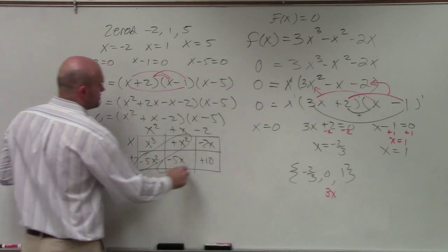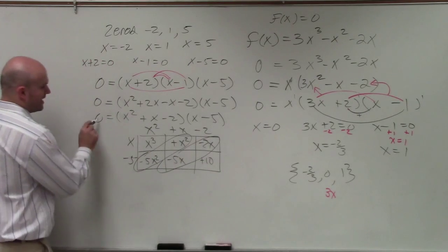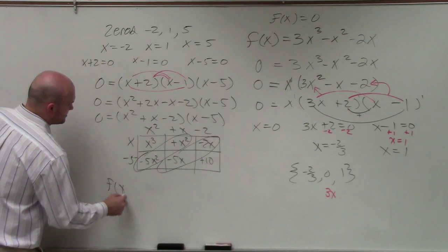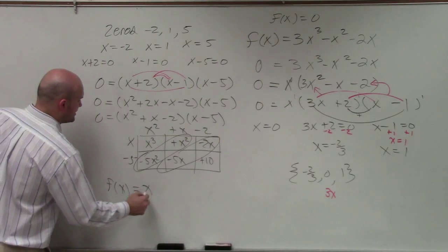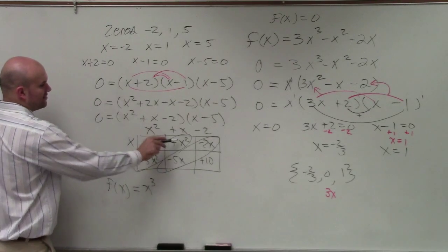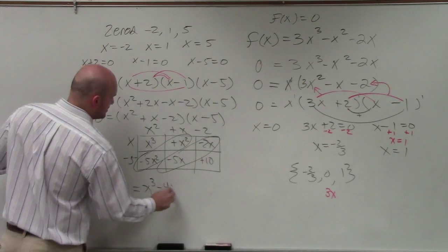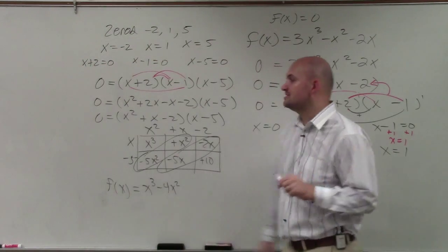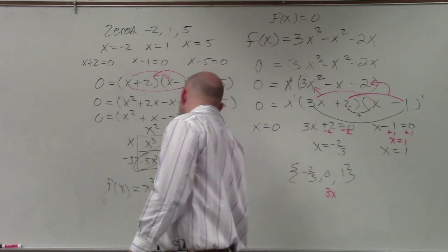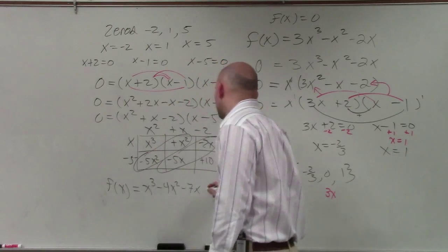My diagonal terms combine. I replace 0 with f of x. And my finally written equation is x cubed. Negative 5x squared plus x is a negative 4x squared. Negative 5x plus negative 2 is a negative 7x. And then plus 10.